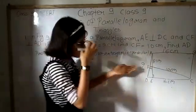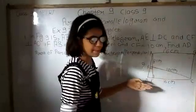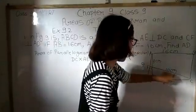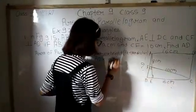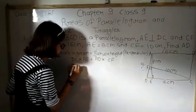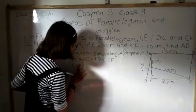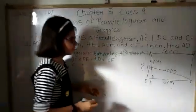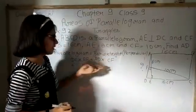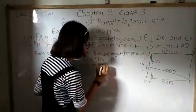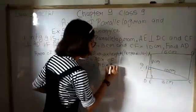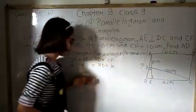Equals to, suppose that AD is our base. AD into CF height. What is our DC? 16 centimeter into what is our AE? 8 centimeter. Equals to what is our AD? We haven't got up to now. What is our CF? CF is 10 centimeter.